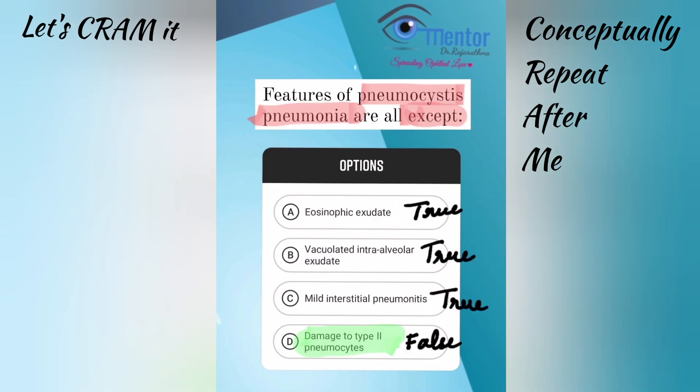The last question is about Pneumocystis pneumonia. It affects the alveoli and the interstitium. The intra-alveolar changes include a lot of exudates that are eosinophil-rich, foamy, and vacuolated. We detect this by staining the lavage using the MTP stains: methenamine silver stain, toluidine blue, and Papanicolaou stain.